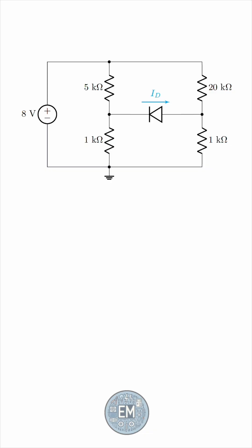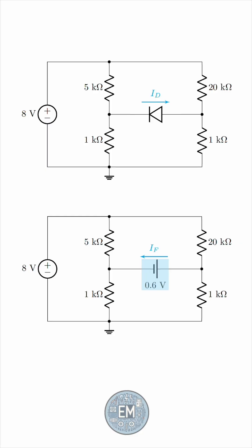In truth, we don't. We're just going to have to make an assumption, solve accordingly, and then check the validity of our assumption once we have the result. So, we'll assume that the diode is forward biased, and has this constant voltage drop of 0.6 volts that the problem talks about.